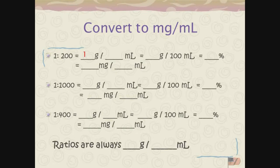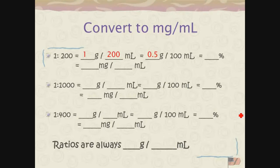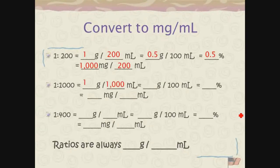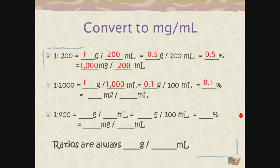1 to 200 means I have 1 gram in 200 milliliters, or 0.5 grams in 100 milliliters. I just divided both the 1 and the 200 by 2, so that would be a 0.5% solution — 1,000 milligrams per 200 milliliters, works out the same. A ratio of 1 to 1,000 means 1 gram in 1,000 milliliters, or 0.1 grams in 100 milliliters — that's a 0.1% solution. You can also express this as 1,000 milligrams per 1,000 milliliters, or 1 milligram per milliliter.